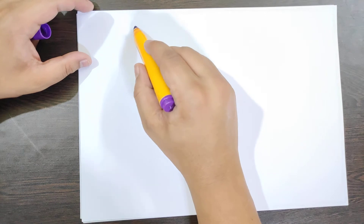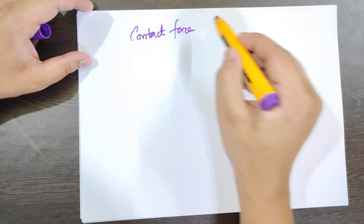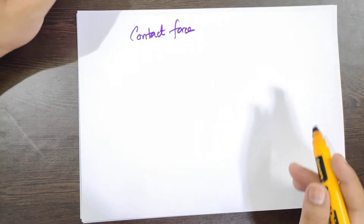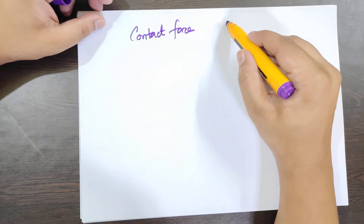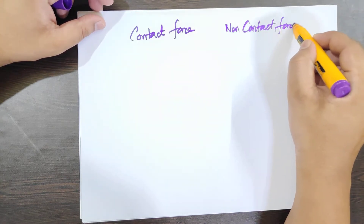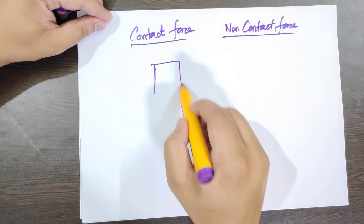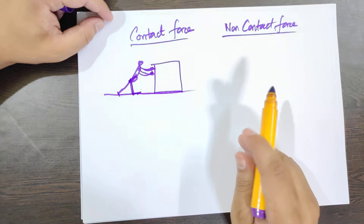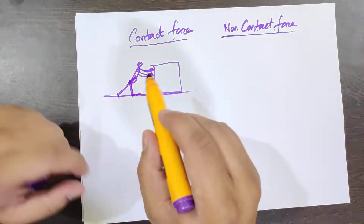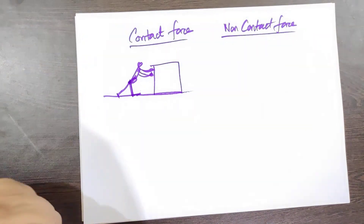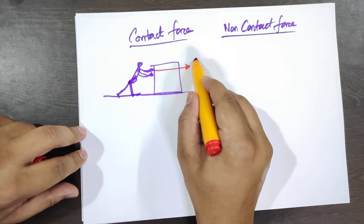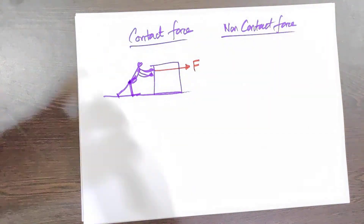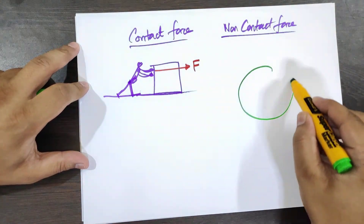Now, what are the types of forces? We will discuss the third law a bit later. Basically, forces are classified as contact force and non-contact force. Contact force happens due to direct contact — for example, suppose there is a block and you are trying to push it; the force applied by you on the block is a contact force. Non-contact force — for example, gravity is a non-contact force.